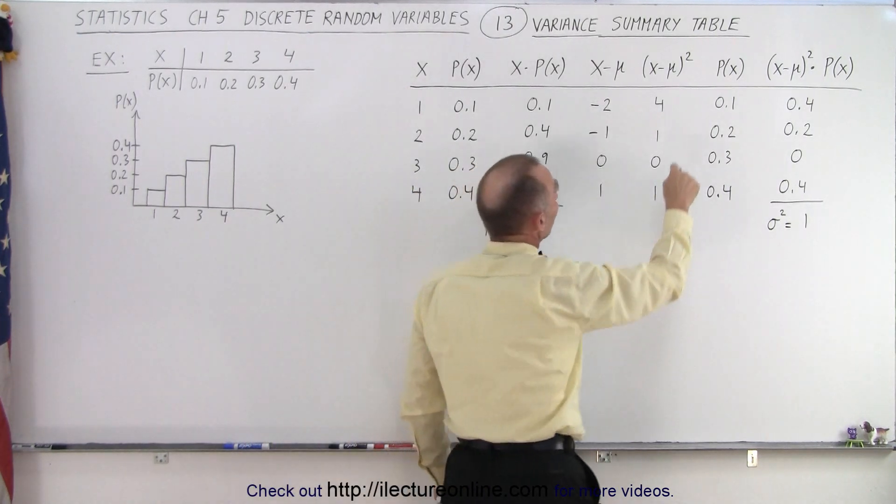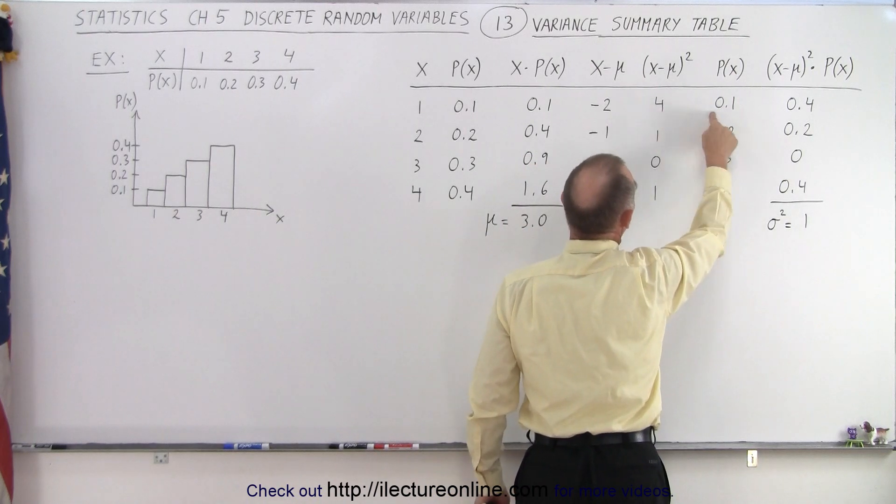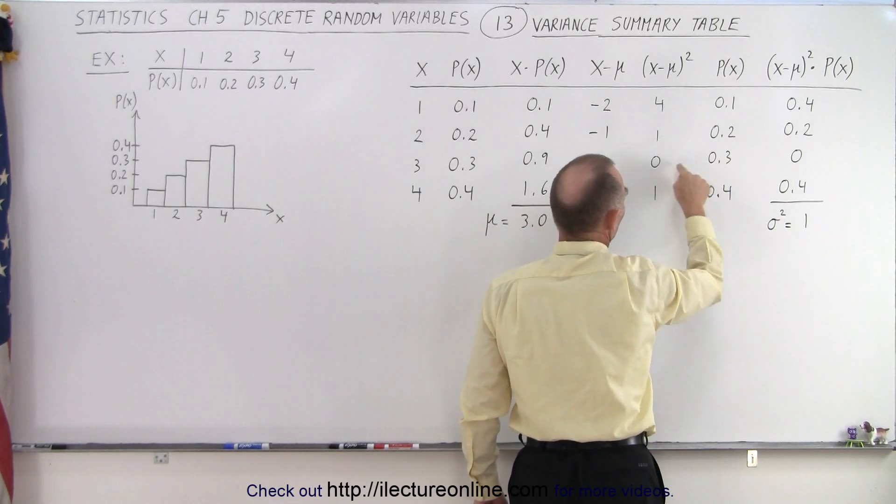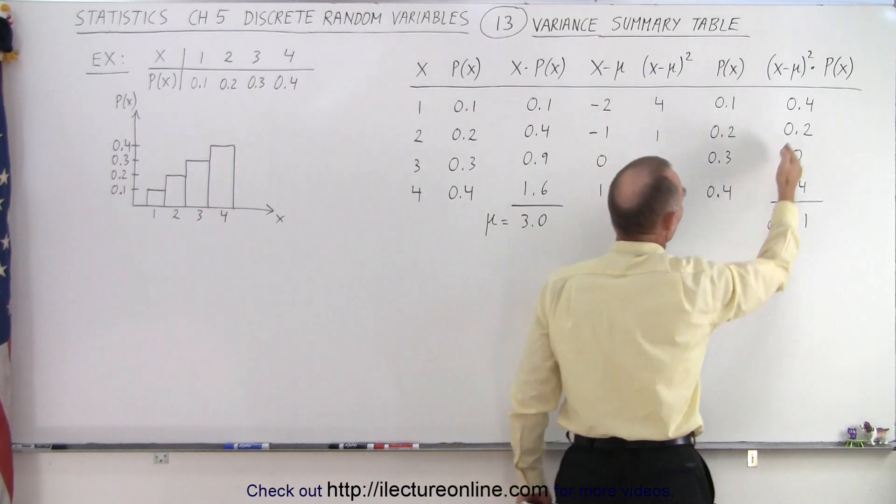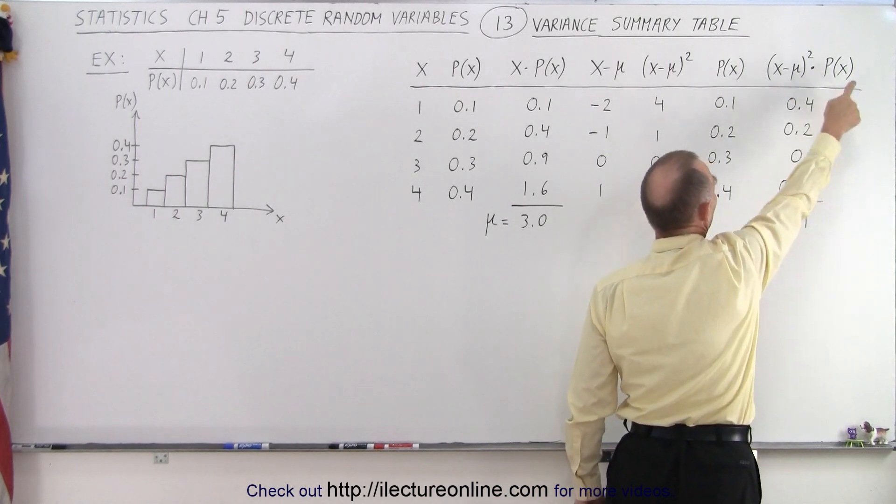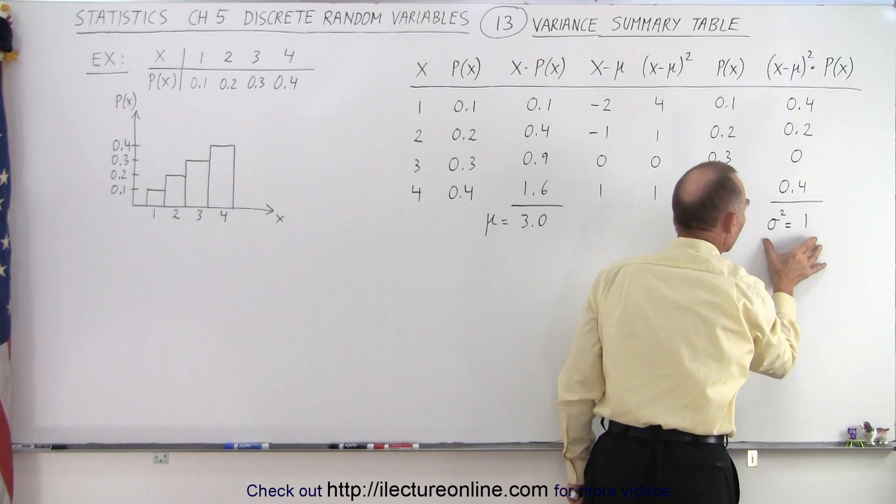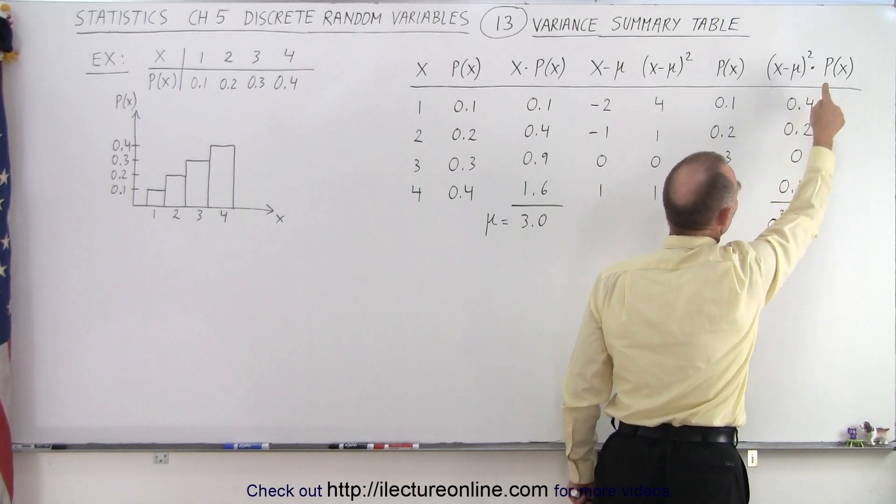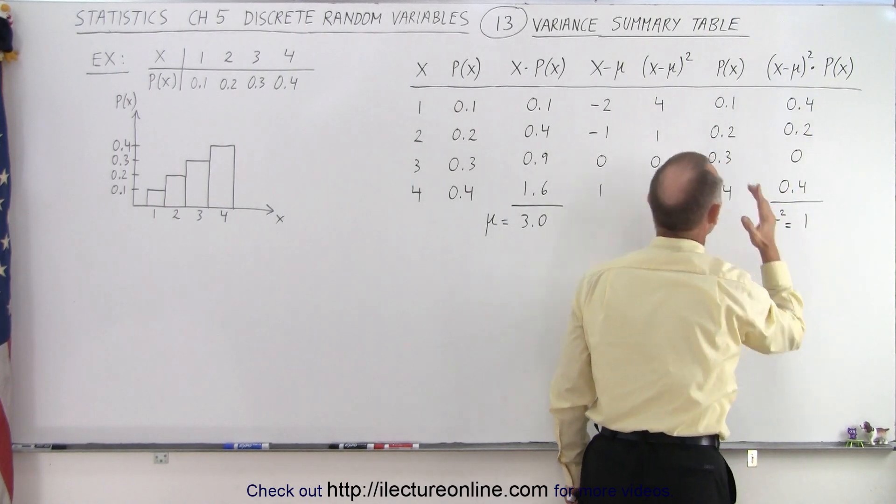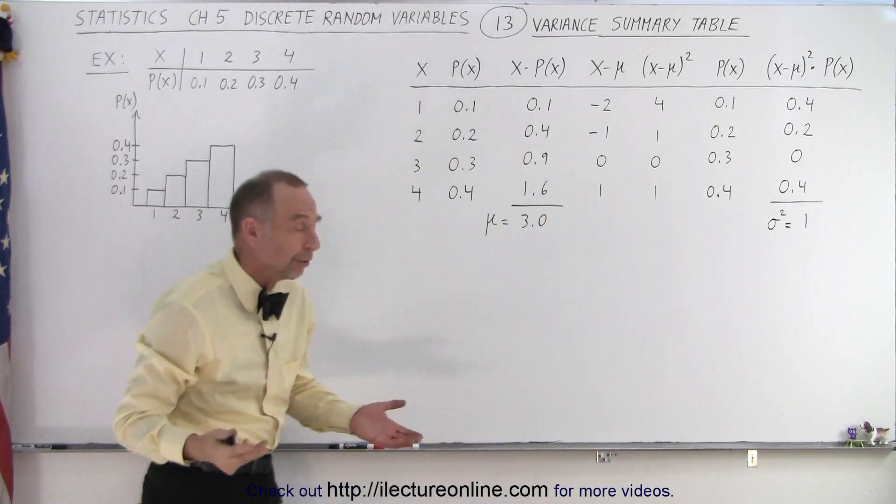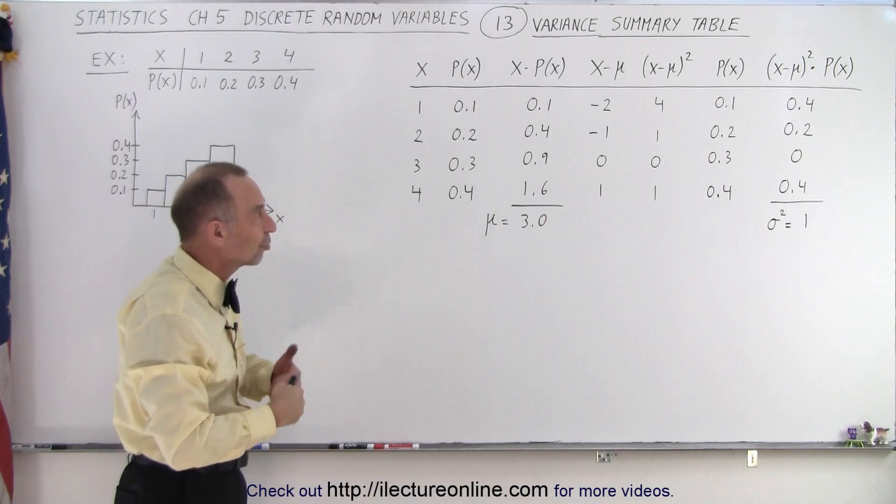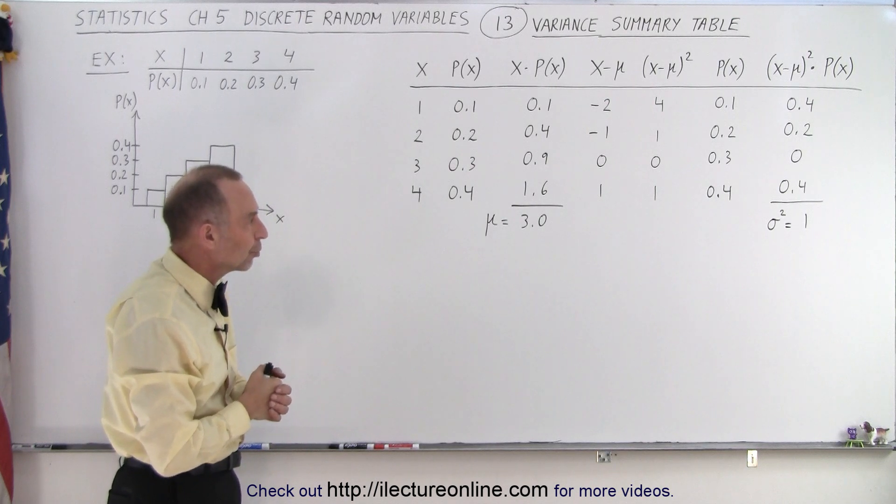Then what we're going to do is we're going to multiply these, so 4 times 0.1, 1 times 0.2, 0 times 0.3, and 1 times 0.4, which is what is listed there. And then when we add them all up, by definition, the sum of all these products ends up being the variance of the probability distribution, or the variance of the discrete variable distribution.